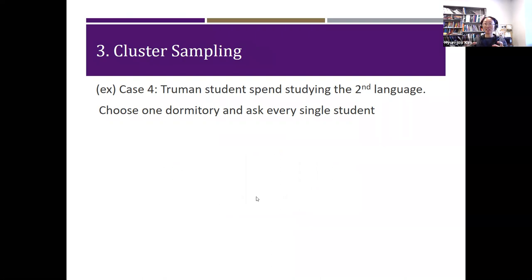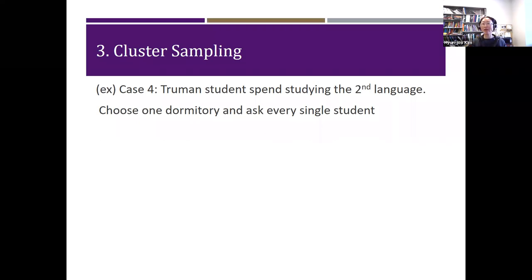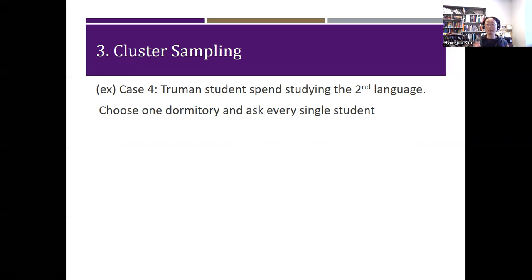Cluster sampling means you choose a cluster. For example, if we're interested in Truman students' hours spent studying a second language, because it's hard to get a random sample, you might choose one dormitory — say Ryle Hall — and ask every single person in Ryle Hall. That seems more feasible than asking everybody. The question is whether Ryle Hall students will be representative of the Truman population — maybe, maybe not. Cluster sampling means you choose a group or cluster of the population and study everybody in that cluster.